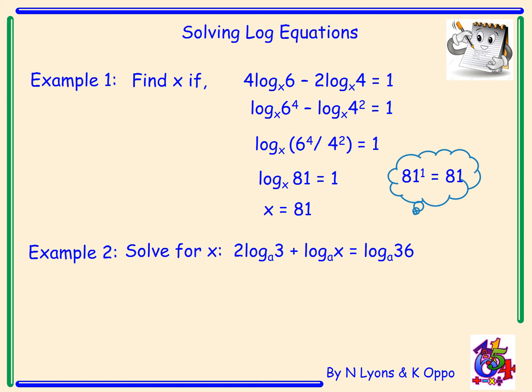Simplify using your rules of logs: the 2 comes up and becomes a power, so we have log 3² (base a) + log x (base a) = log 36 (base a). The only thing that changed was bringing the 2 up to become a power. Now applying Rule 1, three squared is 9, and 9 times x gives 9x.